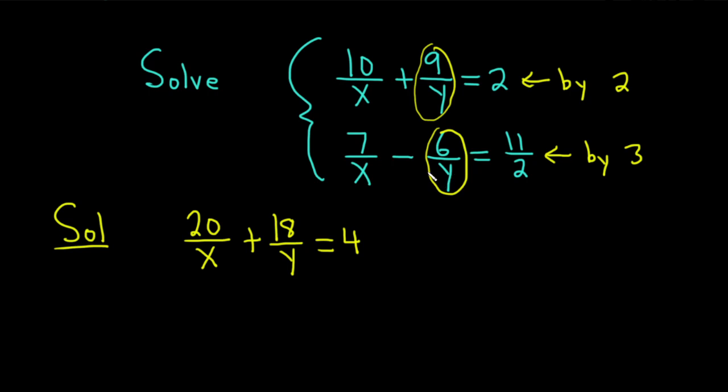Now let's go to the second equation. Multiplying it by 3. 3 times 7 is 21, that's over x, plus, and 3 times 6 is 18. So we have actually, it's minus 18 over y. And then 3 times 11 over 2 is 33 over 2.